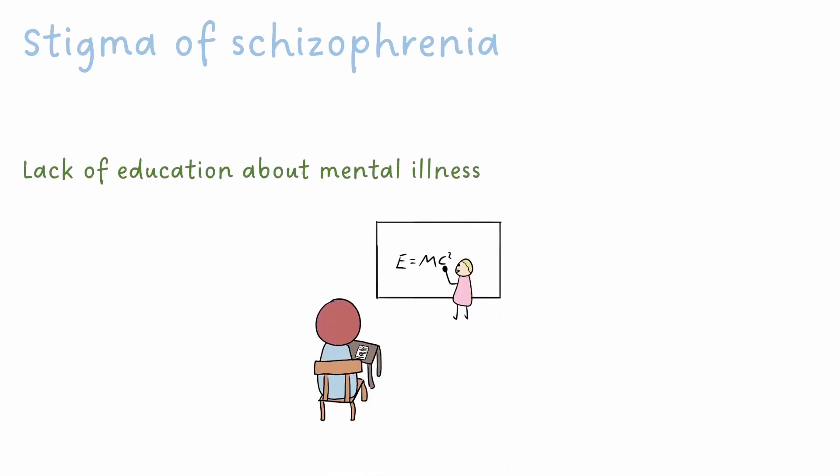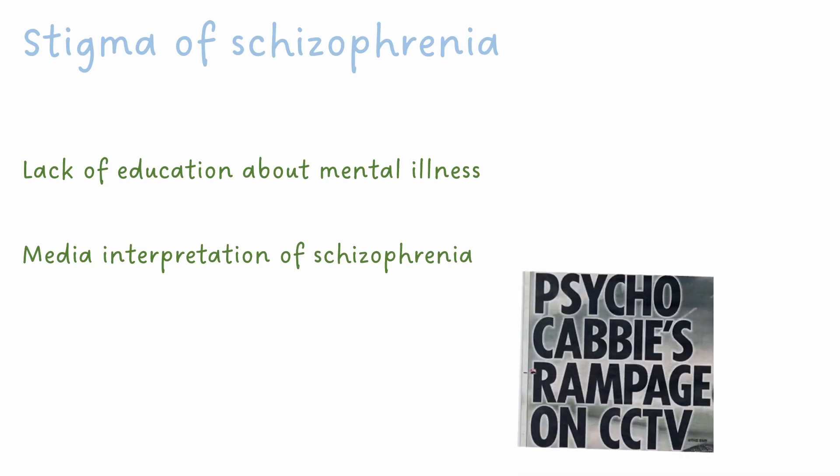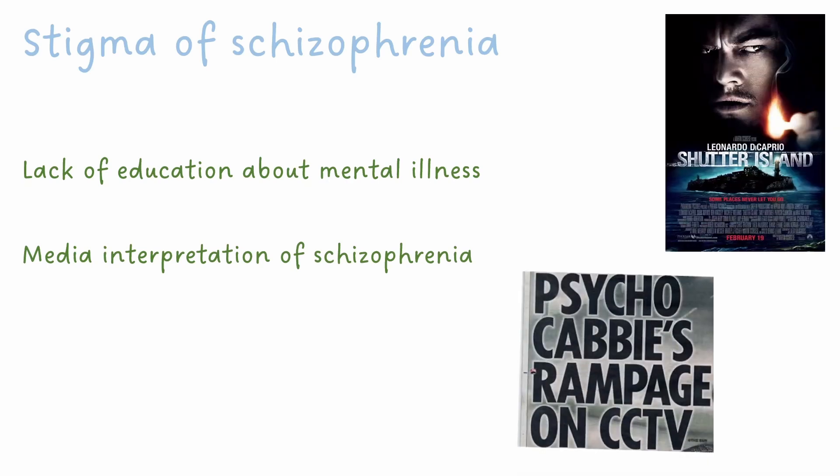Schizophrenia remains a hugely stigmatized and misunderstood illness. This may be a result of lack of education about mental illness as part of school curriculums. It's also perpetuated by the portrayal of mental illness in the media, for example sensationalized news headlines and Hollywood movies. Some stigma is also generated from a fear of violence of people with schizophrenia. However, individuals who have schizophrenia are 14 times more likely to be victims of violence rather than perpetrators of violence, and most violent crimes are committed by those without schizophrenia.